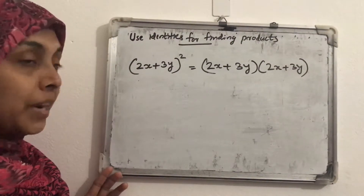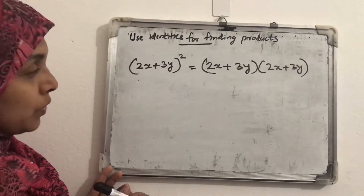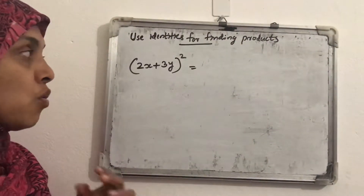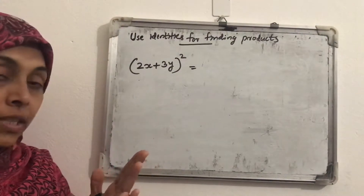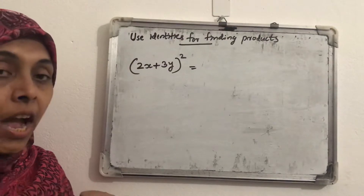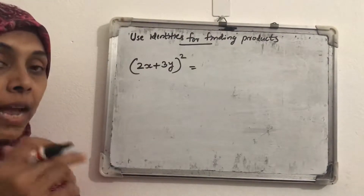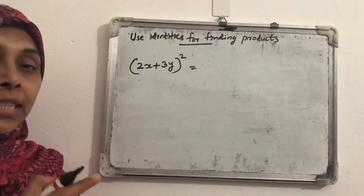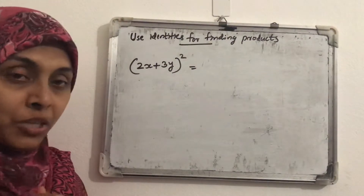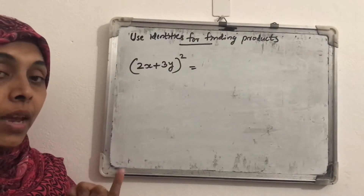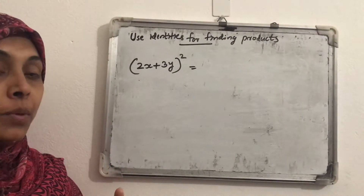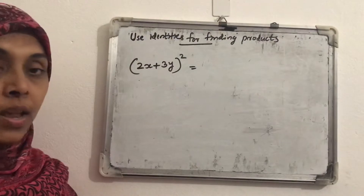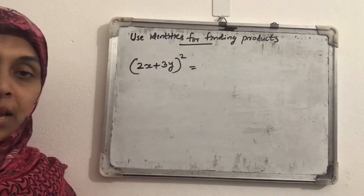But when we use identities, it will be very easy and we can reduce the steps. Last class we discussed about three standard identities and one more. The identities are: (a + b)² = a² + 2ab + b²; (a − b)² = a² − 2ab + b²; (a + b)(a − b) = a² − b²; and (x + a)(x + b) = x² + (a + b)x + ab.